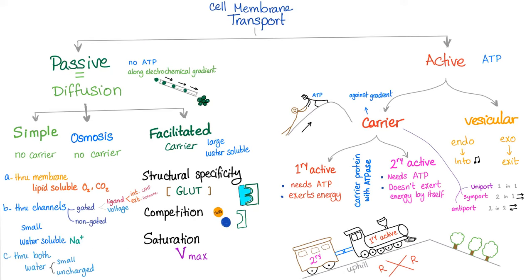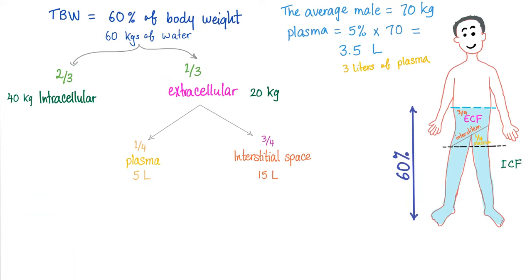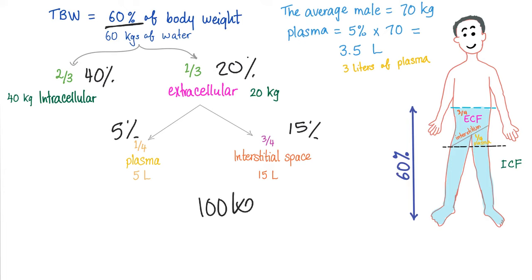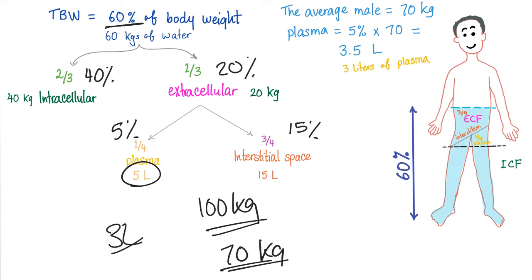I talked about cell membrane transport in the first video, so make sure to check it out. 60% of your total body weight is made of water. 40% of your total body weight is in the intracellular fluid called ICF, and 20% is extracellular — 15% interstitial and 5% plasma. If you are 100 kilograms, plasma is 5 liters; if you're a typical male at 70 or 60 kilograms, plasma is about 3 liters.